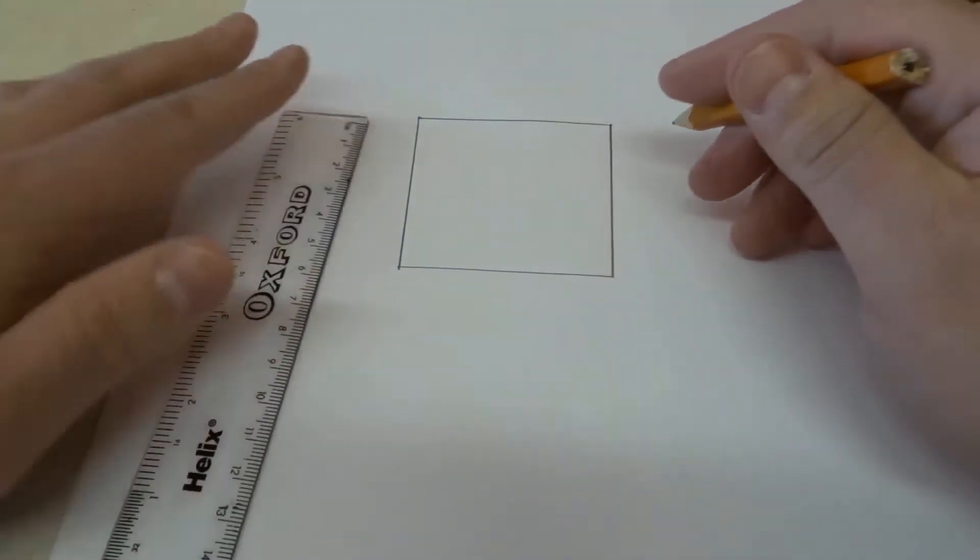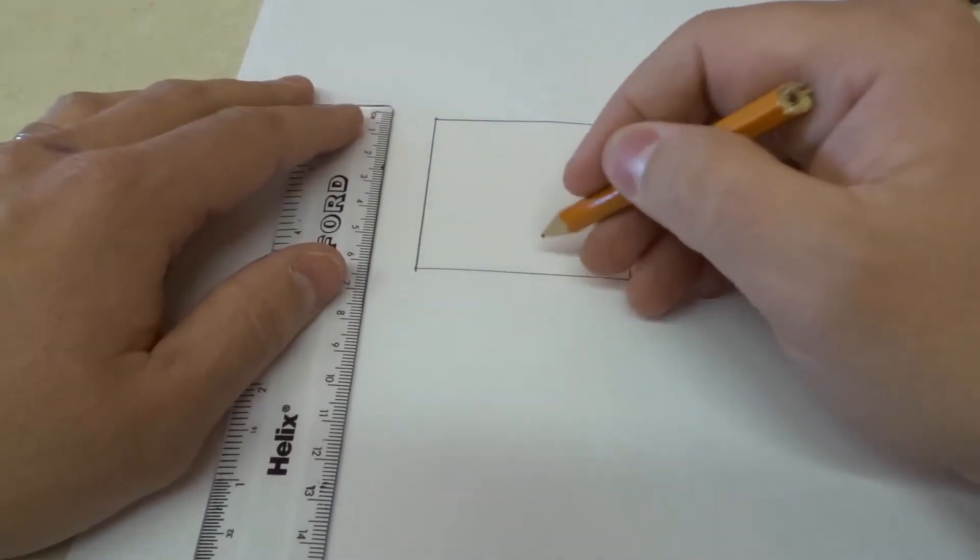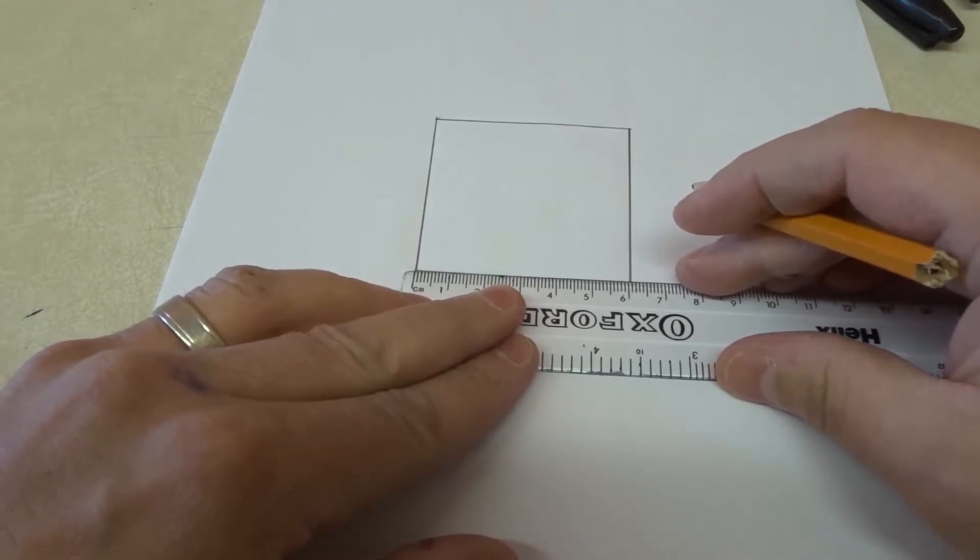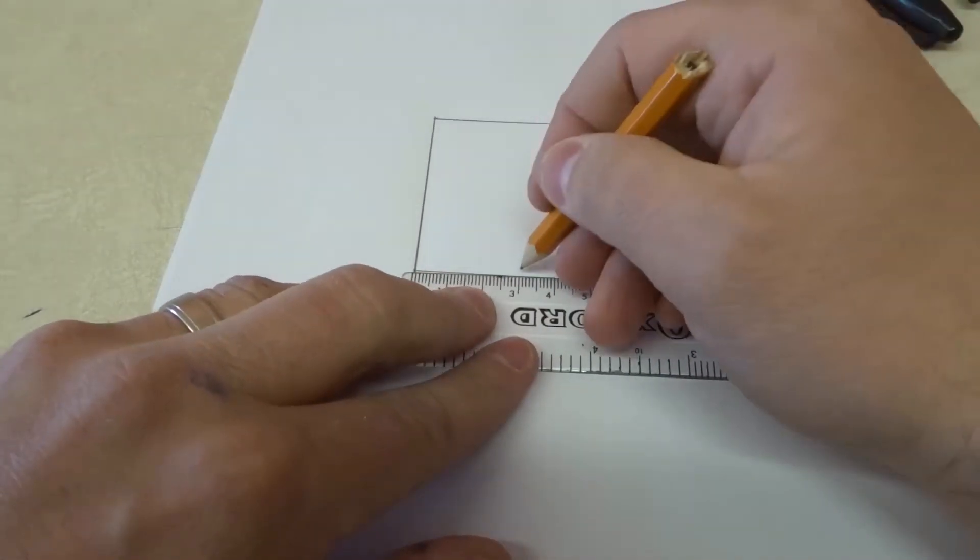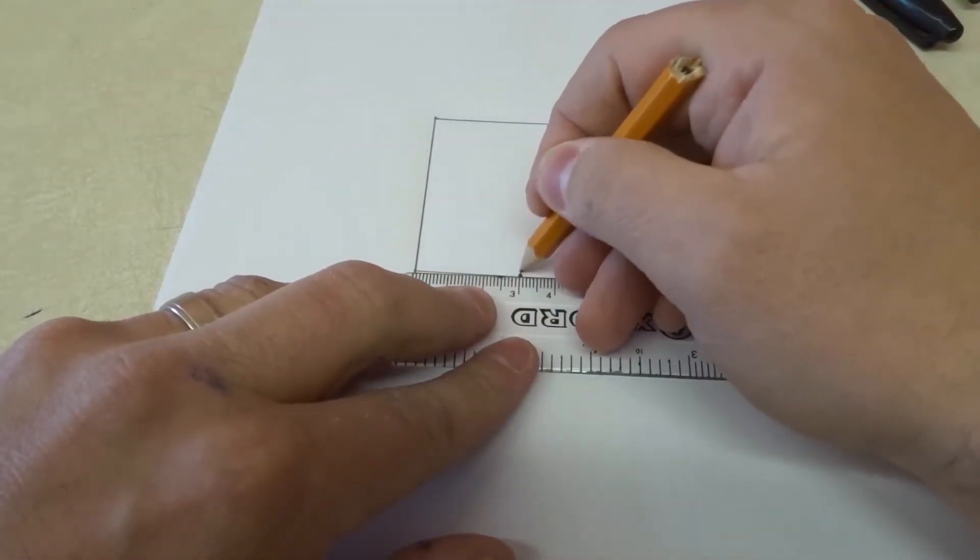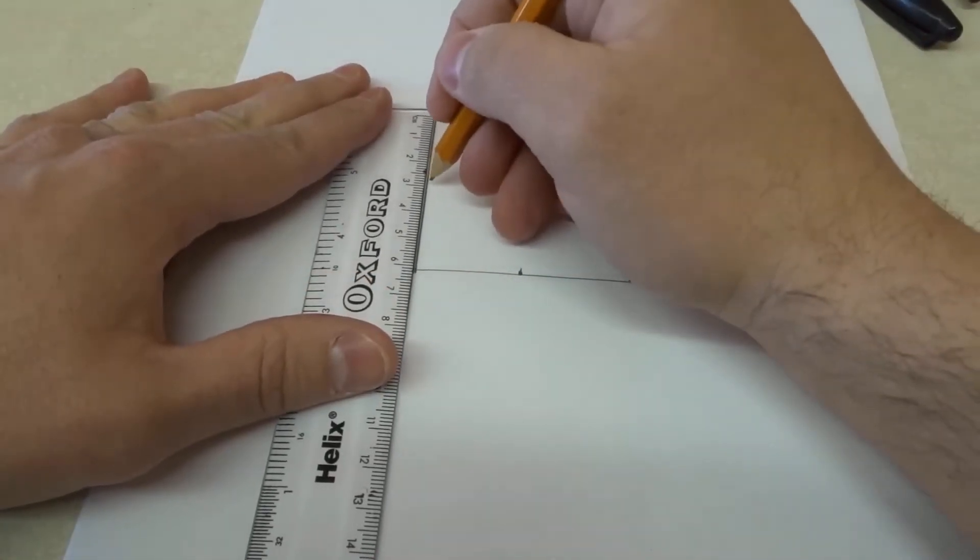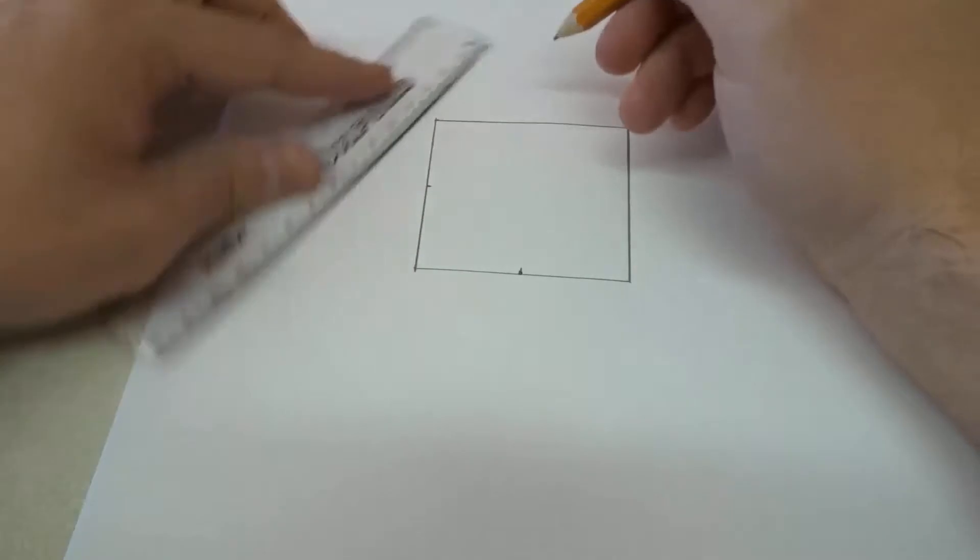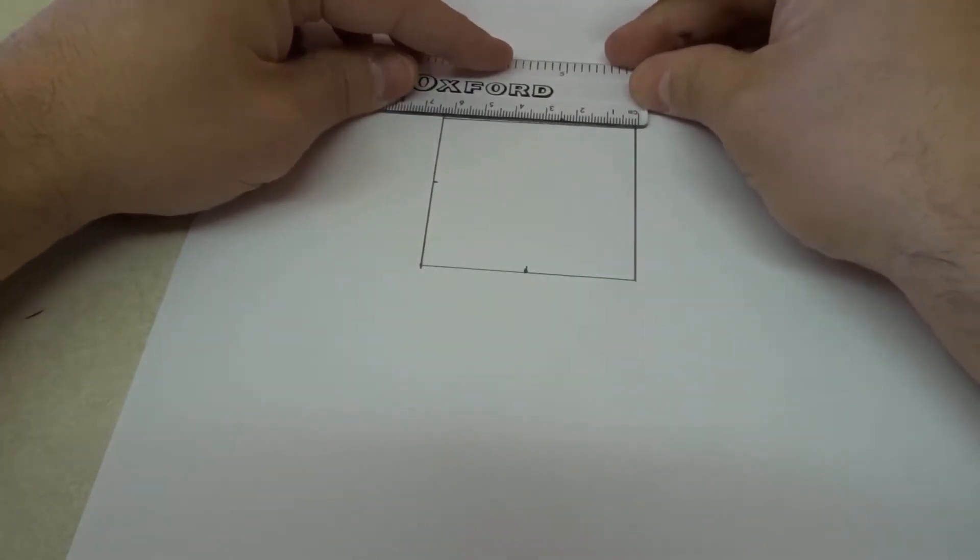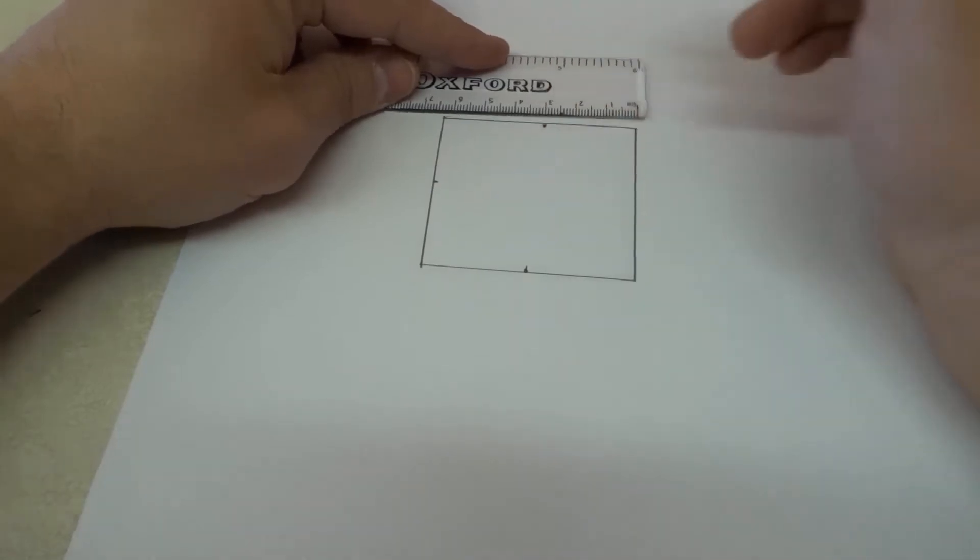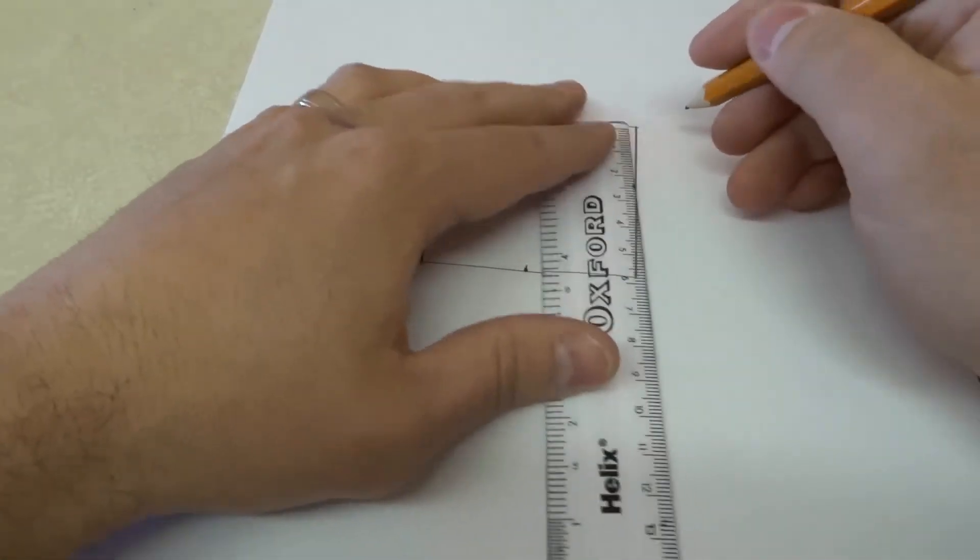Once you've drawn your square you're going to make a halfway marking halfway through each of the sides, so each of these is six centimeters so I'm going to mark at the three centimeter marking. Now obviously you would do this in nice light pencil. I'm just doing it dark so you can see on the video, but in reality you're going to be erasing this, so the lighter that you do this the easier it will be to erase it at the end.